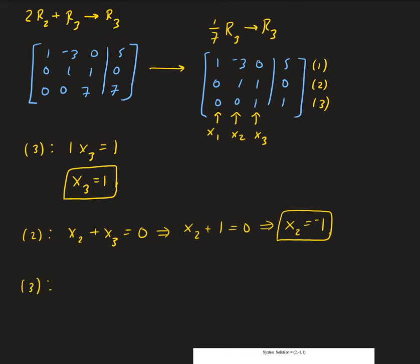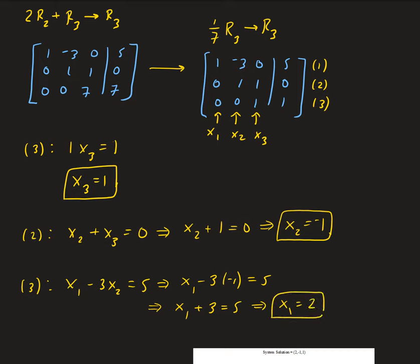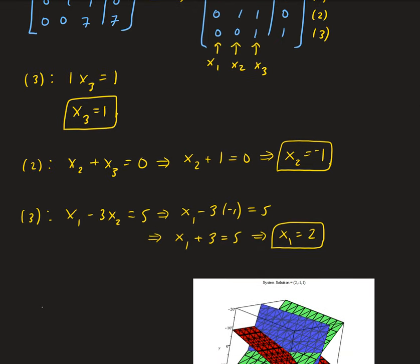From equation 1, we have x1 minus 3x2 equals 5 (the x3 term has coefficient 0 so we ignore it). Since x2 equals negative 1, we get x1 minus 3 times negative 1 equals 5, which gives x1 plus 3 equals 5, so x1 equals 2. Therefore our solution is x1, x2, x3 = 2, negative 1, 1.